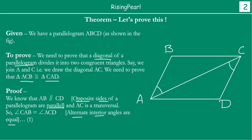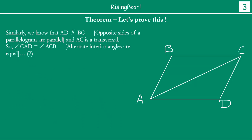Similarly, BC is parallel to AD, because again opposite sides of a parallelogram are parallel. And AC is the same transversal. Then this angle is equal to this angle. Why? For the same reason — because AD is parallel to BC and AC is a transversal, so this angle is equal to this angle. That is the second condition.